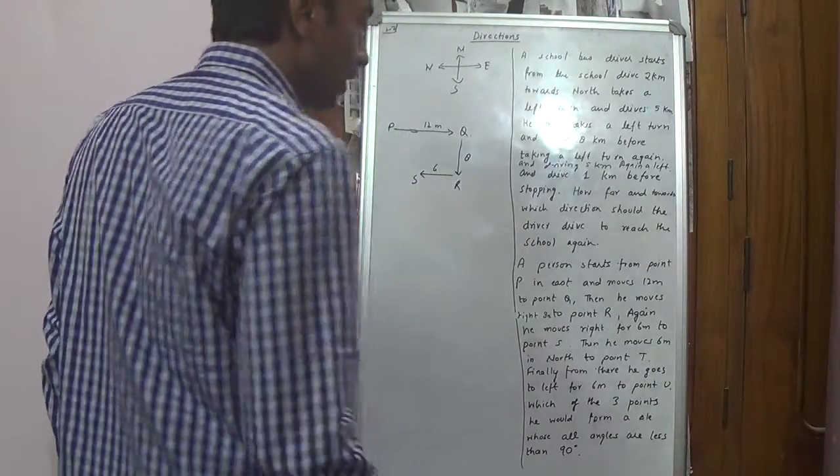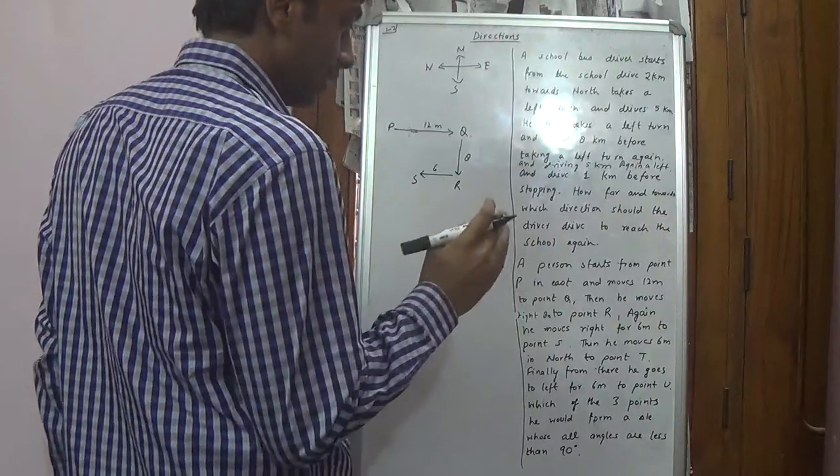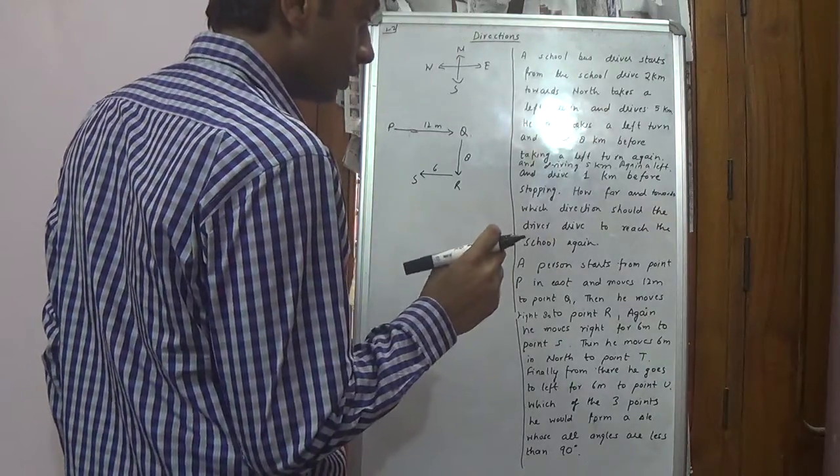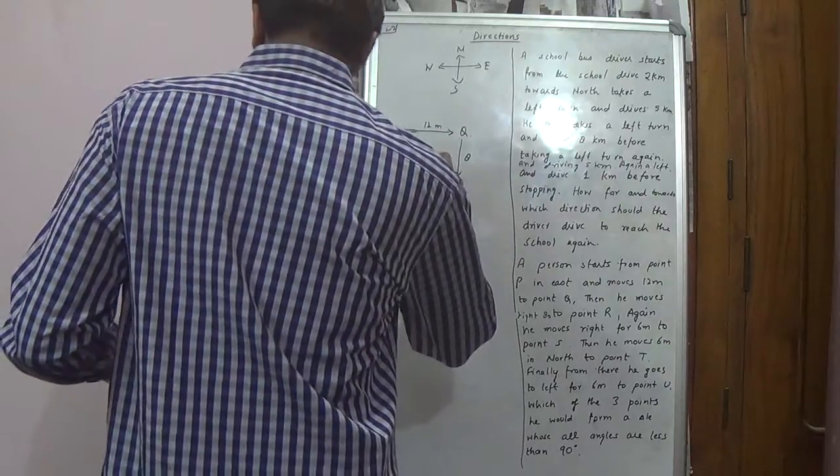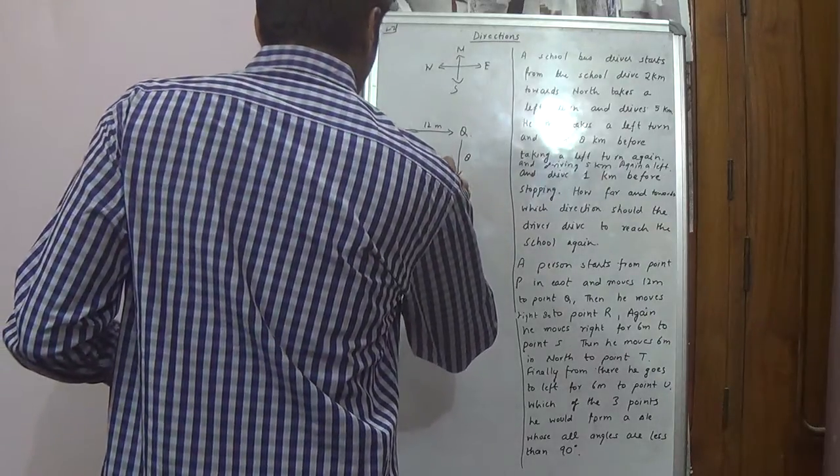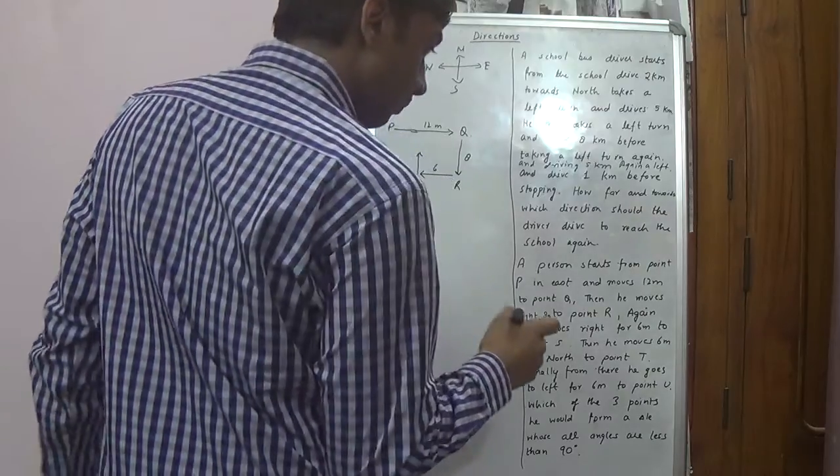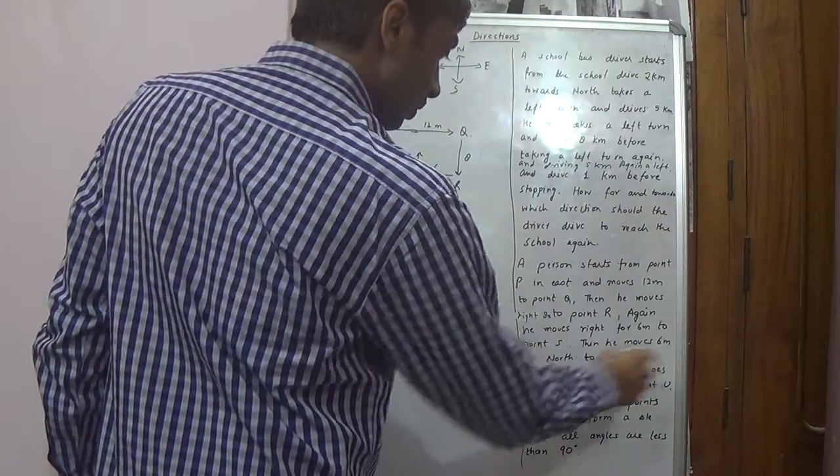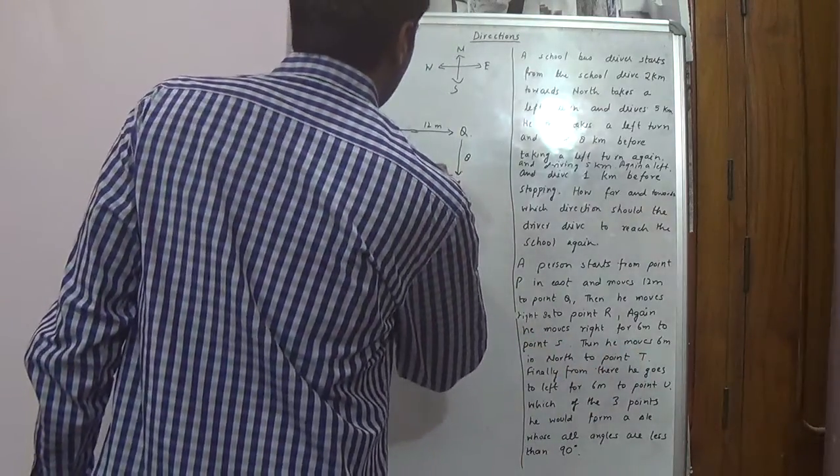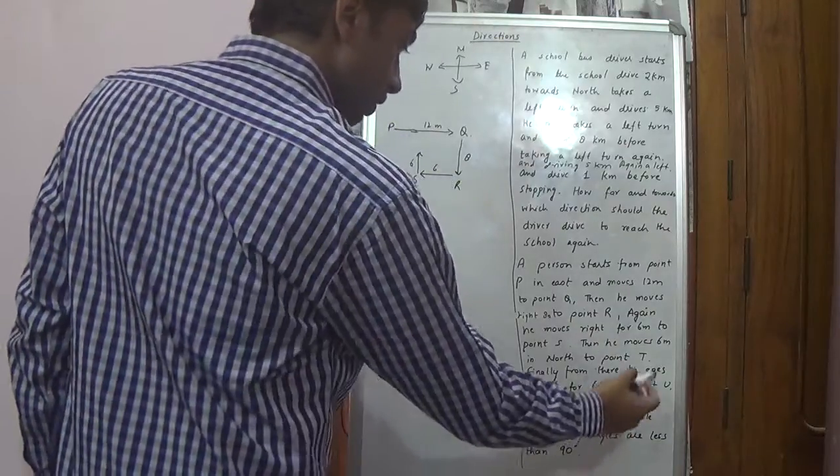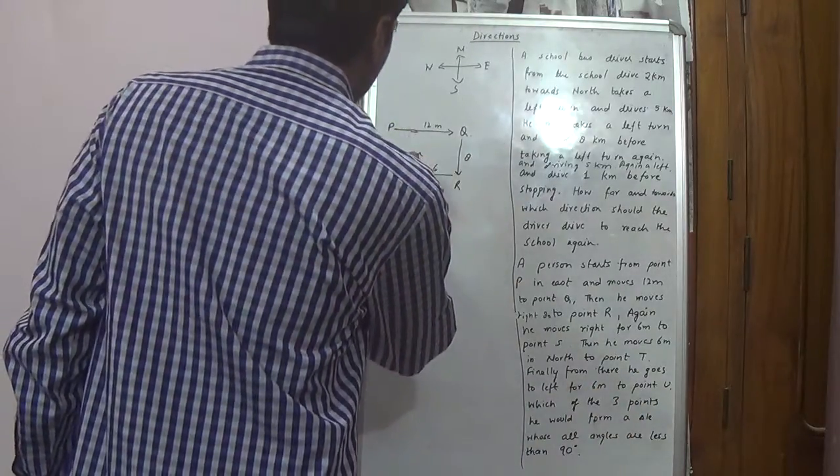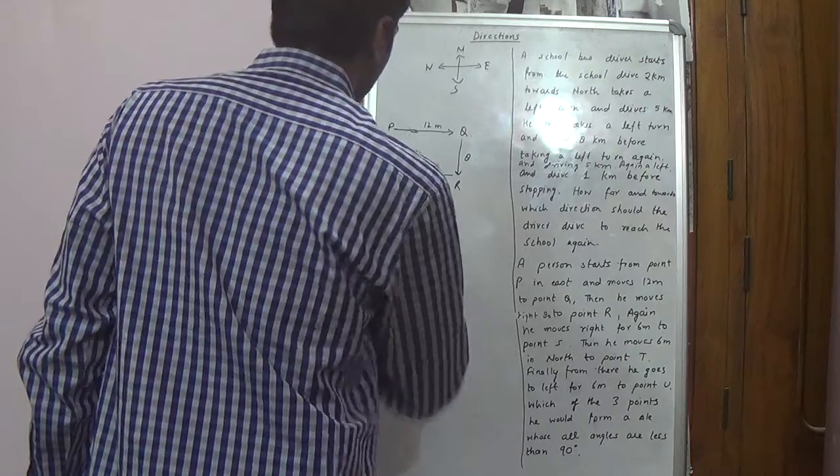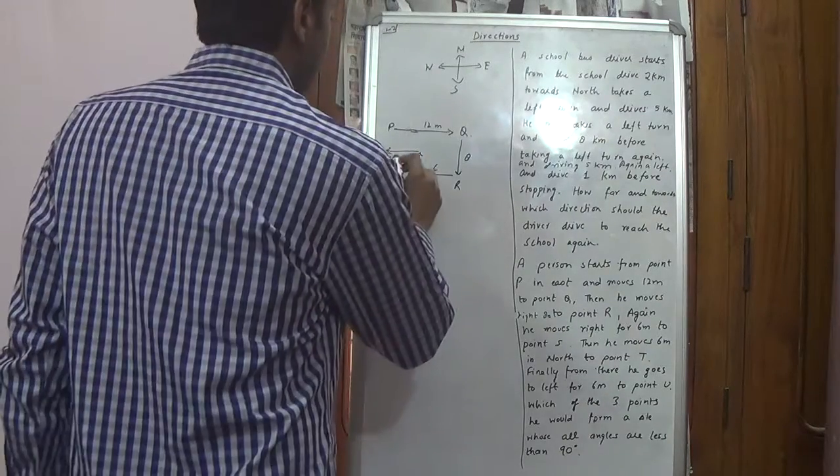From R again he moves 6 meters to point S, then he moves north to point T. Finally from there he goes 6 meters to point U. There he goes left, from here he goes left to point U, again this is 6 meters.